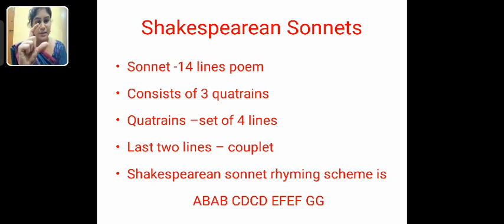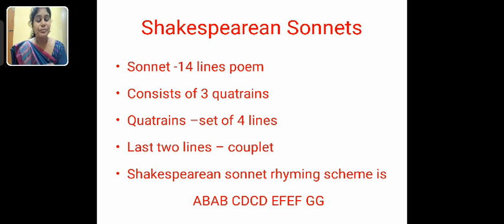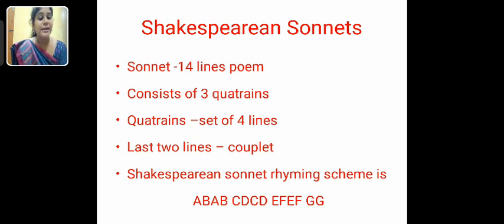The first stanza has four lines, the second stanza has four lines, and the third stanza has four lines. The last two lines of the sonnet are called the couplet. The Shakespearean sonnet rhyming scheme is A-B-A-B, C-D-C-D, E-F-E-F, and G-G.